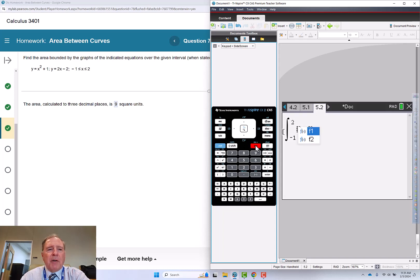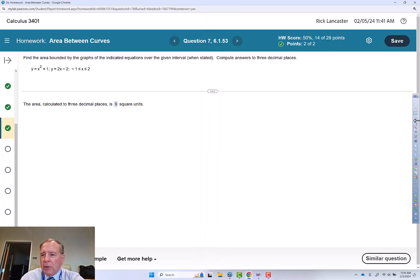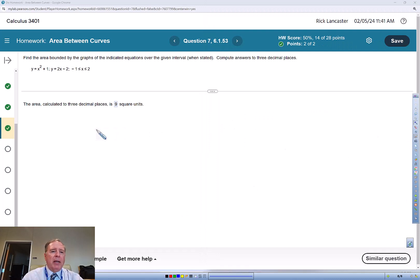Our upper function is the parabola f1, and then we're going to subtract the lower function, f2. We'll also do this one by hand.